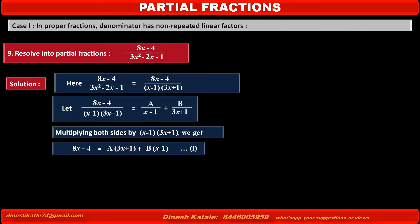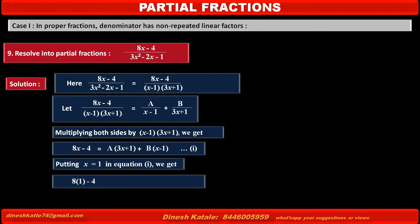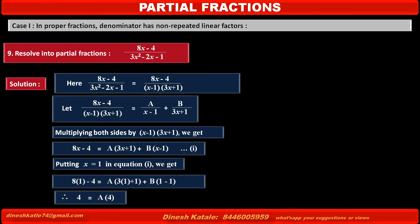Now we find the values of A and B. To find A, we eliminate the B term by putting x = 1 in equation 1. The left-hand side becomes 8(1) - 4 = 4, and the right-hand side becomes A(3×1 + 1) + B(1 - 1) = 4A + 0. Therefore A = 1.